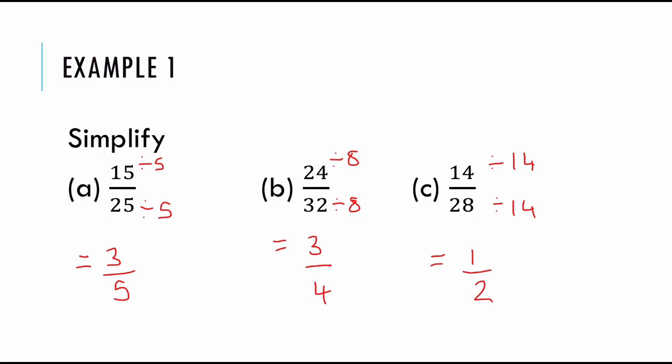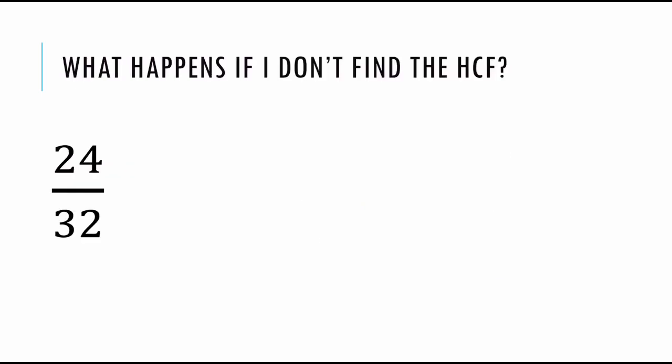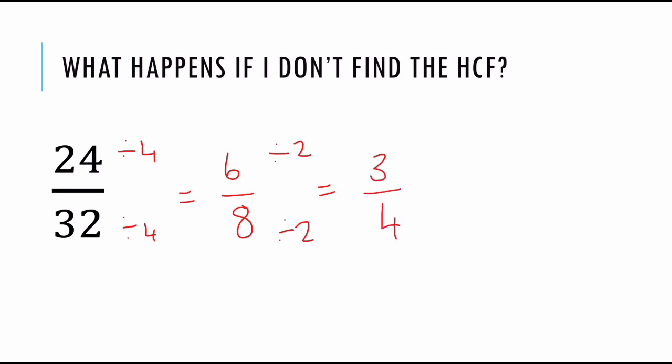Sometimes we can't spot what the biggest number is that goes in. Let's go back to example B, the twenty-four over thirty-two. What happens if you forget that eight is a factor and you just remember that four is a factor? If I divide top and bottom by four, I get six over eight. We have simplified, but is this in its simplest form? Is there any number greater than one that can go into six and eight? Yes — there's two. So I can divide by two on the top and bottom, and you'll see how that gets me to three over four, which we did get to in example B by dividing by eight. It's okay if it takes more than one step, as long as you get to that simplest form.